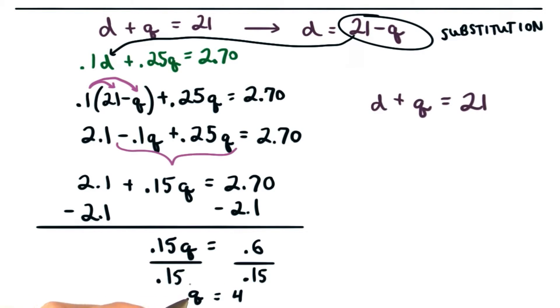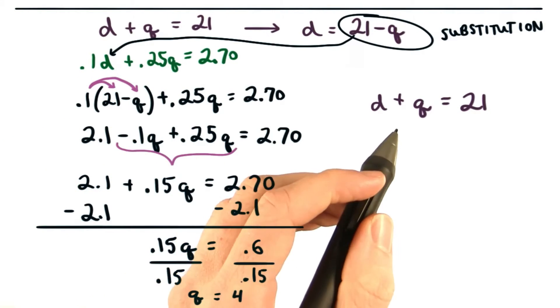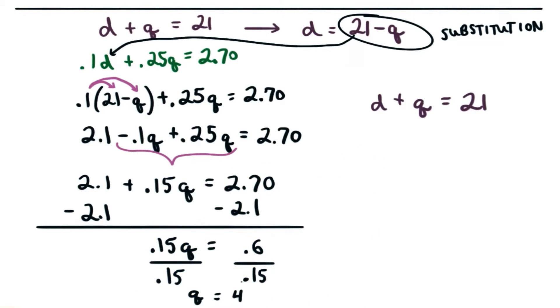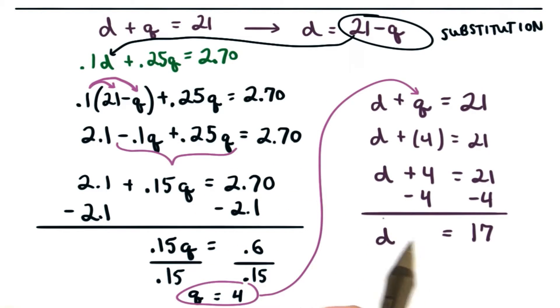Q stood for the number of quarters, so we have 4 quarters. But I still need to find the number of dimes. I can use my first equation and plug in 4 for q to find the number of dimes, d. Solving for d, I get d is equal to 17. So we have 4 quarters in our register and 17 dimes.